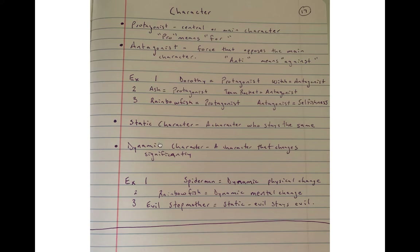Once again we have our four terms today: protagonist, antagonist, static character, dynamic character. Those are the important terms — you might put stars next to them or highlight them in your notes. Record all of the examples we go through as a class. Taking notes is a really important skill, and the only way to get better is by doing it. If you need more time to copy them down, hit pause.